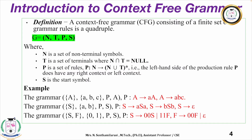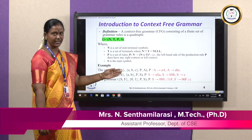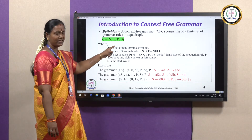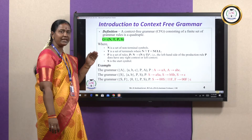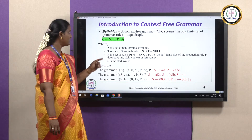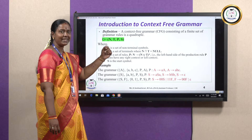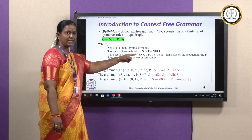First we are going to see the introduction to context-free grammar. A context-free grammar consists of a finite set of grammar rules and is a quadruple. This context-free grammar, shortly called CFG in capital letters, is represented as (N, T, P, S). N is a set of non-terminals, normally written in capital letters. T is a set of terminals, and the intersection of non-terminal and terminal is empty — N ∩ T = null.